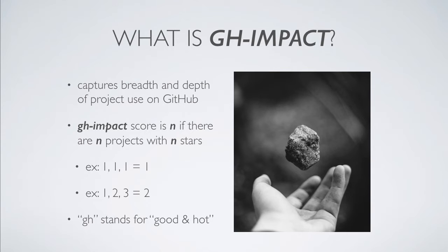For example, if there are three projects each with one star, then we have one project with one star, we do not have two projects with two stars, so the GH Impact score is one. Now if we have three projects with one star, one with two stars, and one with three stars, the score is two — because there are two projects with two stars, but only one project with three stars. So the best number here is two.